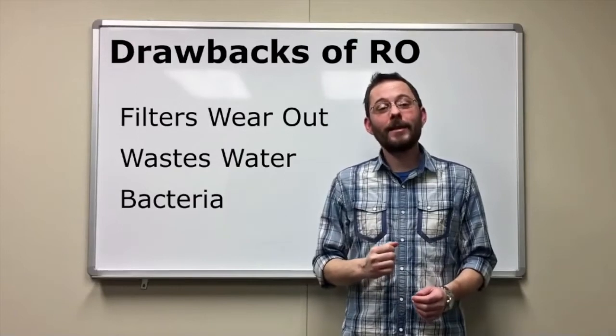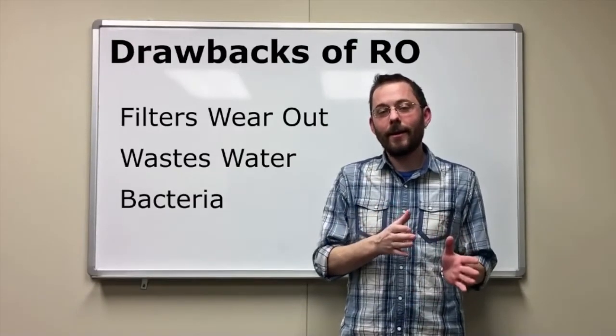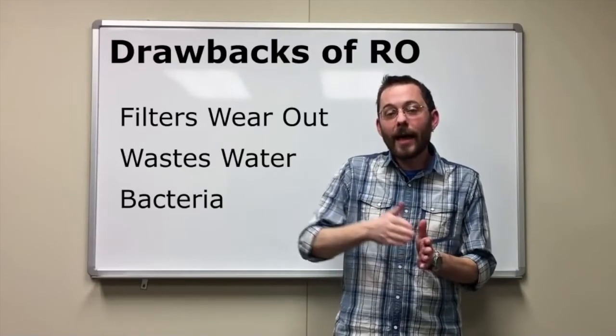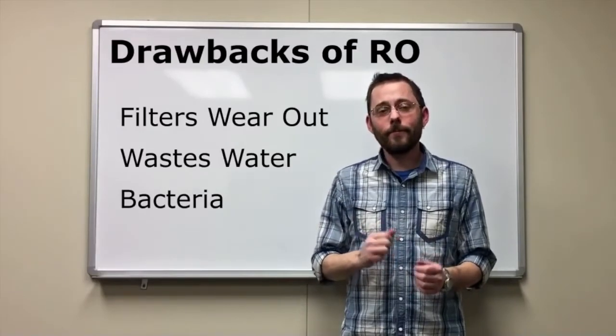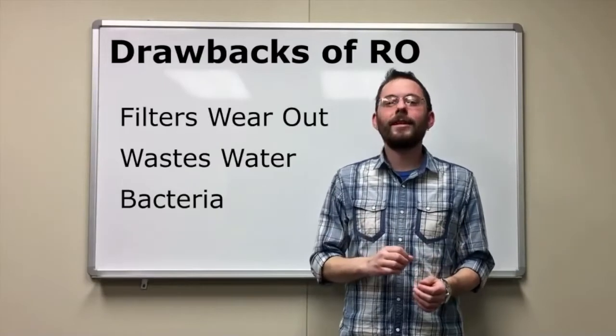Another big drawback is bacteria. Bacteria can build up on the contaminated side of the semi-permeable membrane. These colonies can then pass through the membrane in what is known as bacteria creep. RO systems are better than filters, but not the most ideal solution.